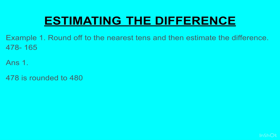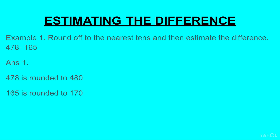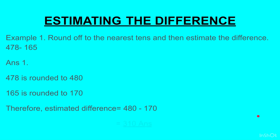478 will become 480. Next, 165 will round off to 170. Again we look at the ones place — it is 5, and 5 always rounds off to the upper limit, so 165 will become 170. Therefore the estimated difference is equal to 480 minus 170.